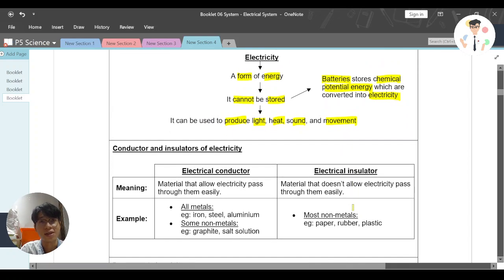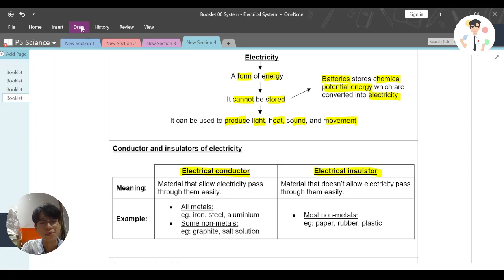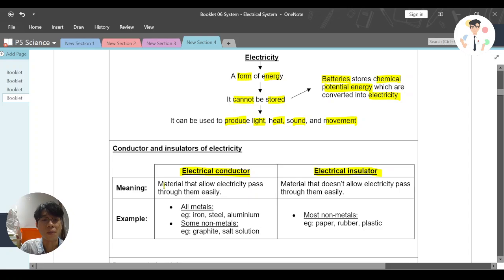And when it comes to electricity, it's important to understand that there's two items here which is called electrical conductor or electrical insulator. So what is the difference between conductor and insulator? Conductor is something or materials that allow electricity to pass through them easily. But on the other hand, insulators are materials that doesn't allow electricity to pass through them easily.